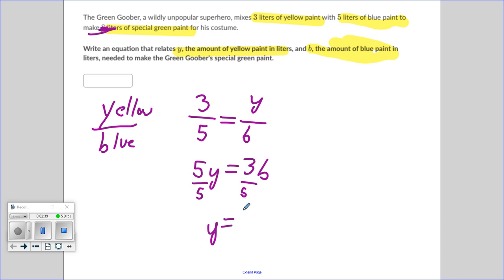And 3B divided by five, well, three divided by five is three over five B.